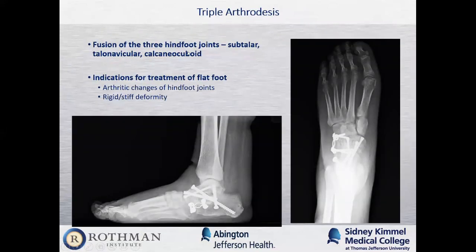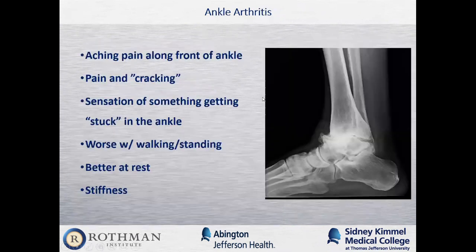A triple arthrodesis is another surgical option for patients with a rigid deformity that doesn't passively correct. The osteotomies and bone cuts are only effective if the deformity is flexible. When the deformity becomes rigid or the joints become arthritic, a fusion of the affected joints — the subtalar, talonavicular, and calcaneocuboid joints — must be performed in the appropriate position.